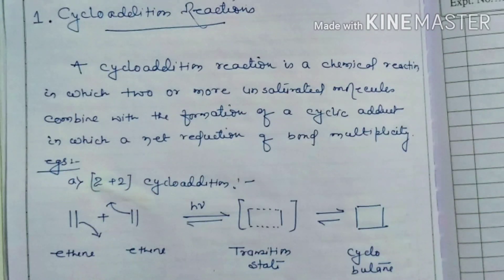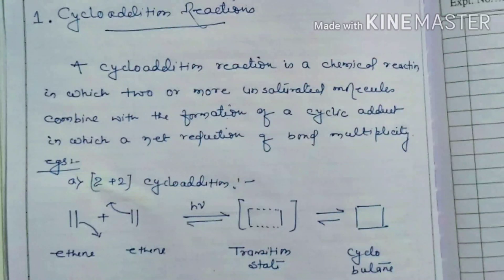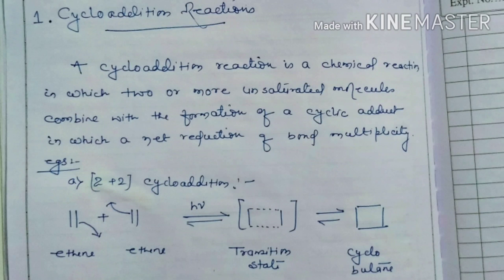A cycloaddition reaction is a chemical reaction in which two or more unsaturated molecules — unsaturated meaning compounds having at least one double or triple bond — combine with the formation of a cyclic adduct. Adduct means addition product, in which there is a net reduction of bond multiplicity. The formation of new bonds will reduce the bond multiplicity, and as bond length increases, bond multiplicity decreases.